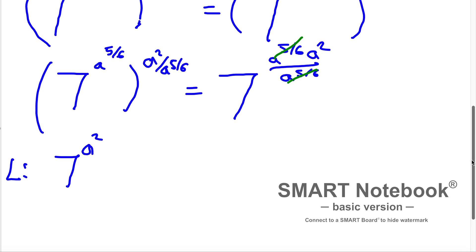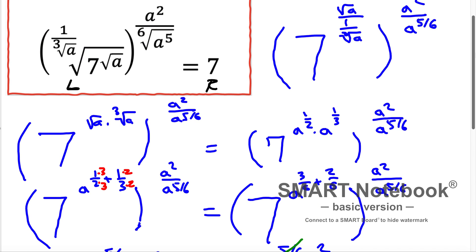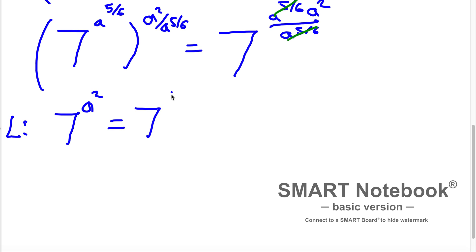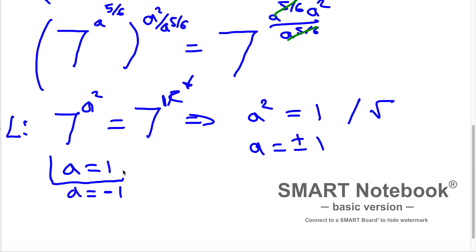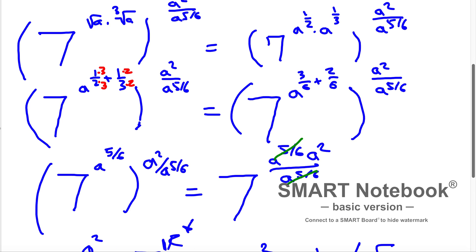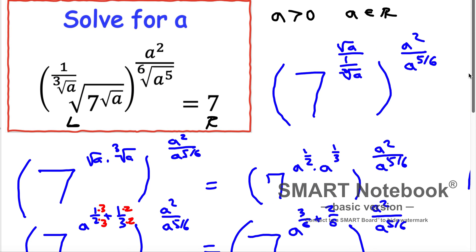But don't forget this was the left side. The right side of the equation was 7, which equals 7 to the power of 1. Since the base is the same, the powers must be equal, so A squared is equal to 1. Taking the square root of both sides, A is equal to plus or minus 1. But the only solution is A equal to 1, because we already made the restriction that A must be greater than 0 and an element of real numbers. Plugging in minus 1 would give an imaginary number, so minus 1 is an extraneous solution. The only solution is A equals 1.